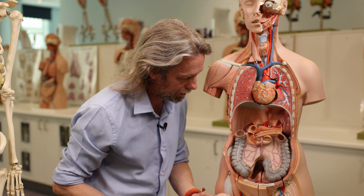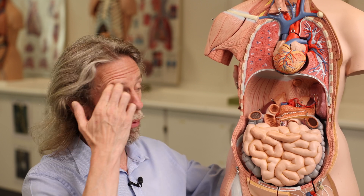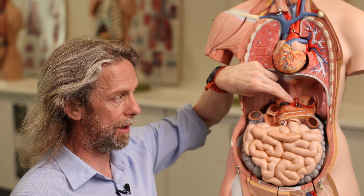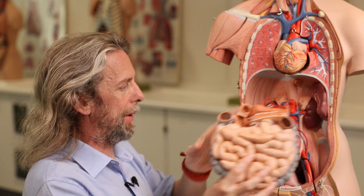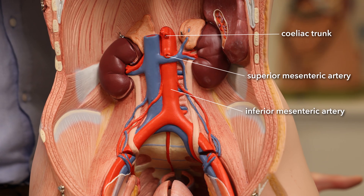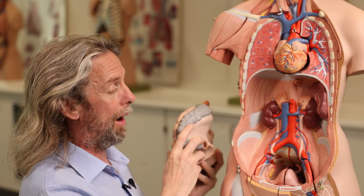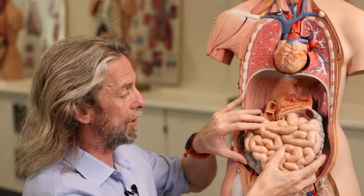We can already see a lot of vessels here. The main vein we're interested in is the superior mesenteric vein. We talk about foregut, midgut, and hindgut embryologically, and that's useful for adult anatomy. The foregut is supplied by the celiac trunk, the midgut is supplied by the superior mesenteric artery, and the hindgut by the inferior mesenteric artery. The small bowel is part of the midgut, so it receives blood from the superior mesenteric artery and drains blood back to the superior mesenteric vein - the venous equivalent.